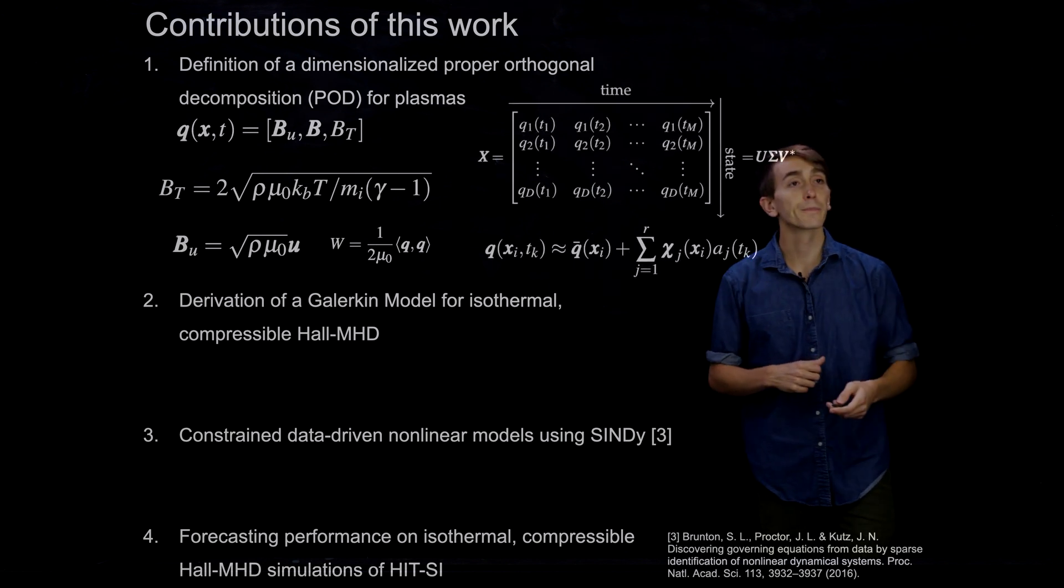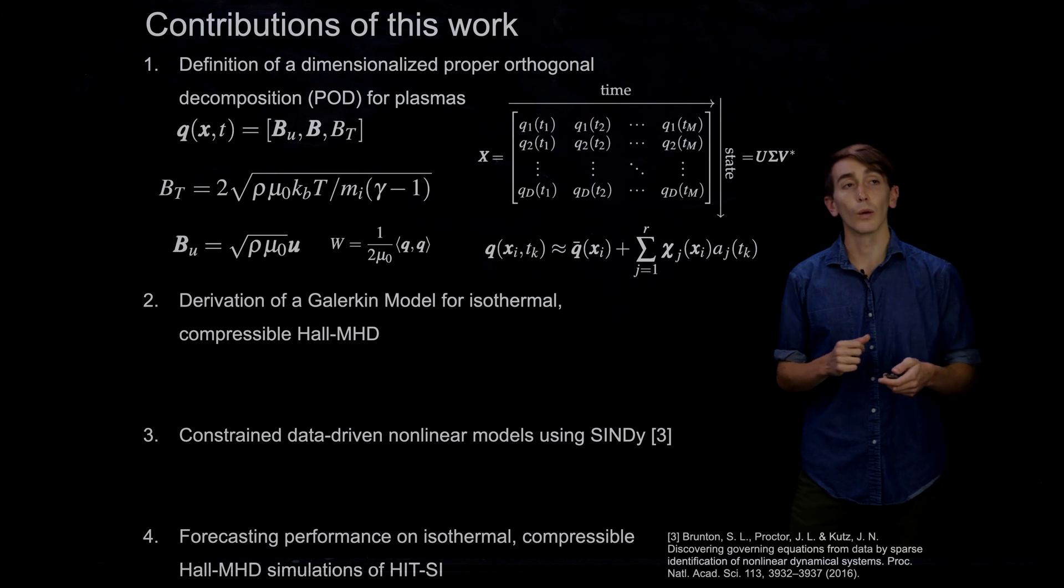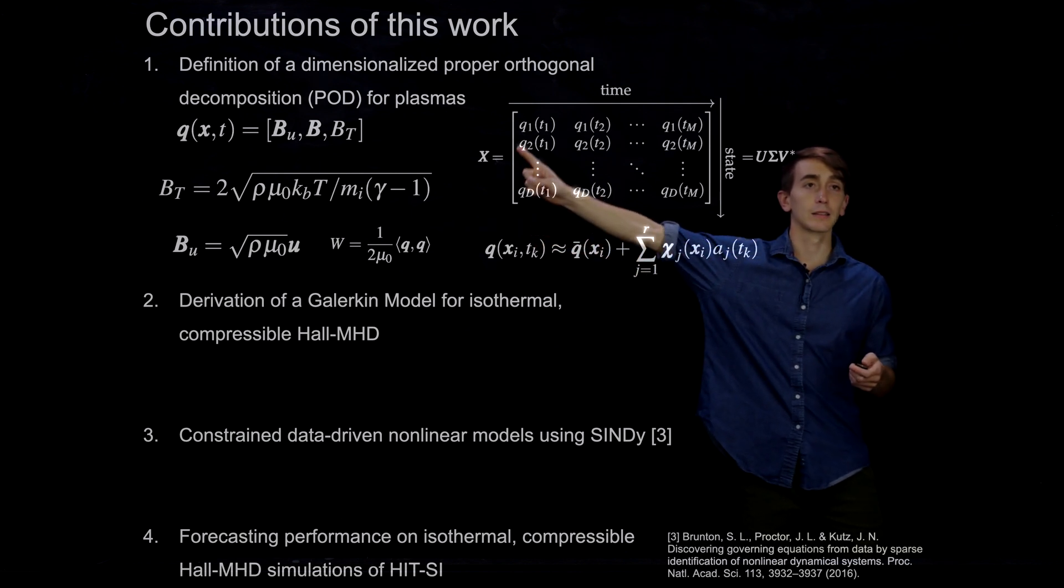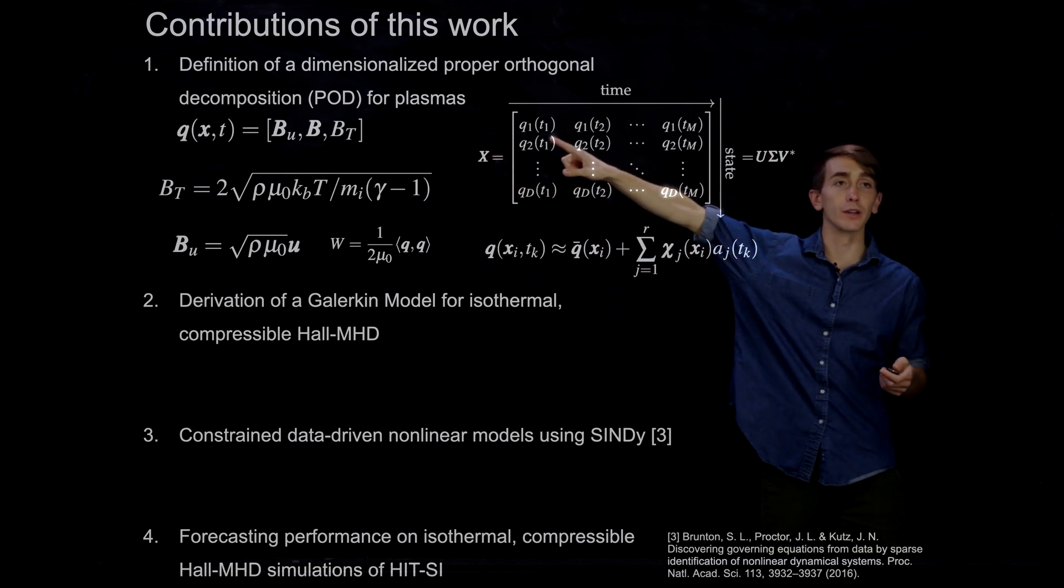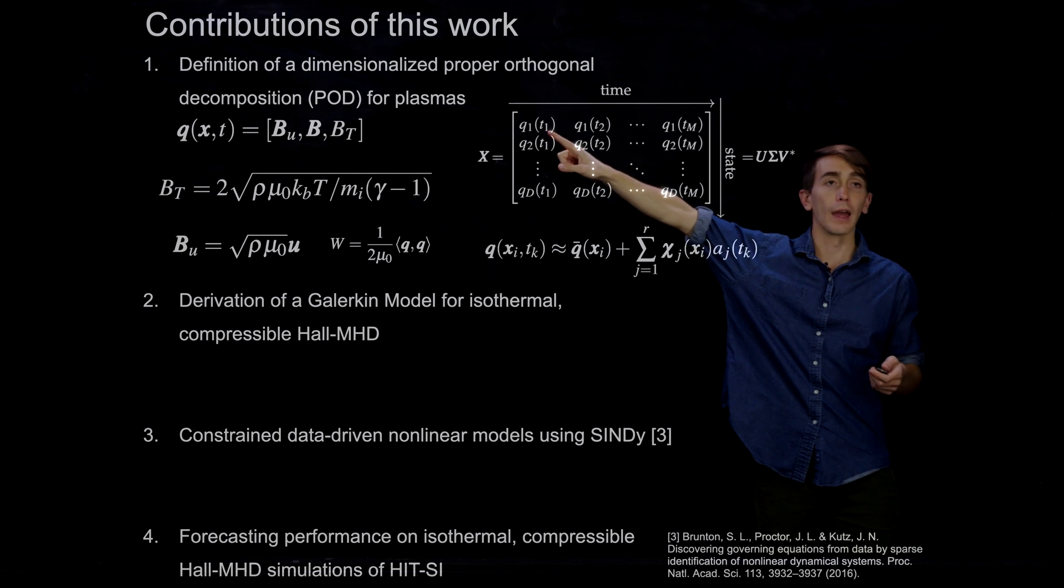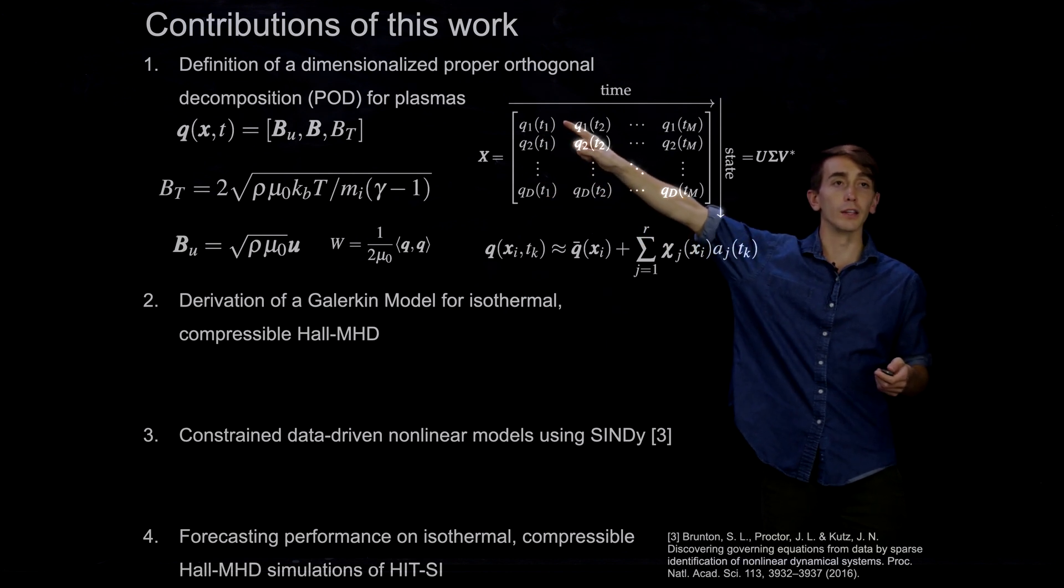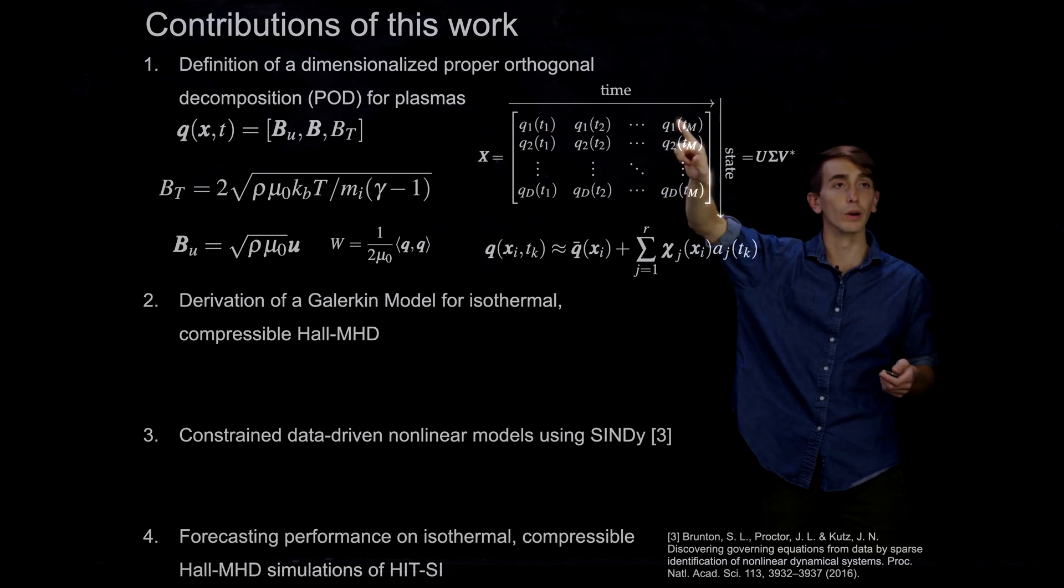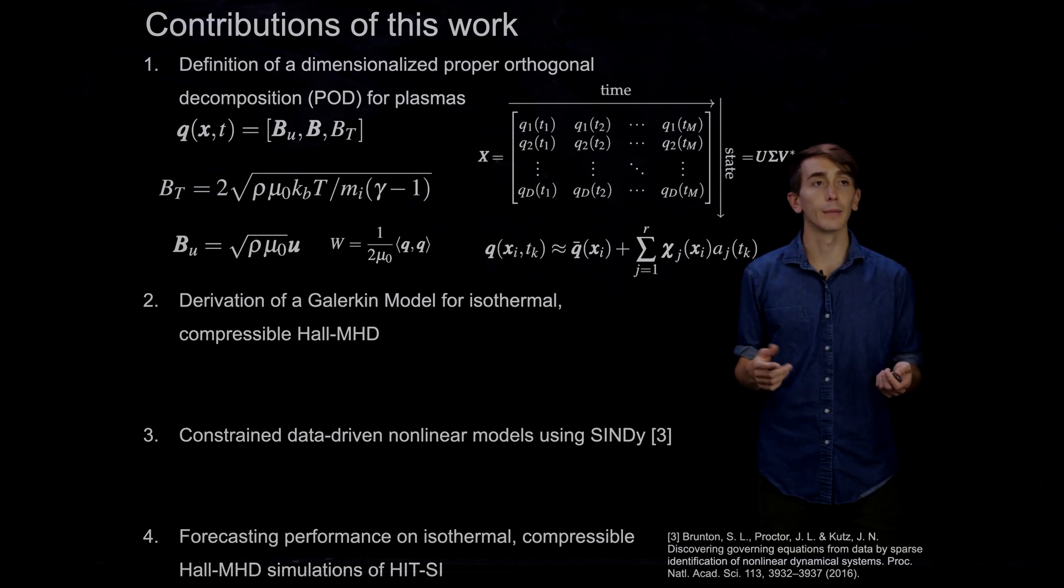And so a POD, what you typically do is you do a singular value decomposition. And what we're taking an SVD of is this data matrix X over here. And what it is, is you take a bunch of measurements of your vector Q. And so we're taking D measurements here. And then you take each of these measurements at time snapshots T1 through TM here. So we build up this data matrix in space and time.